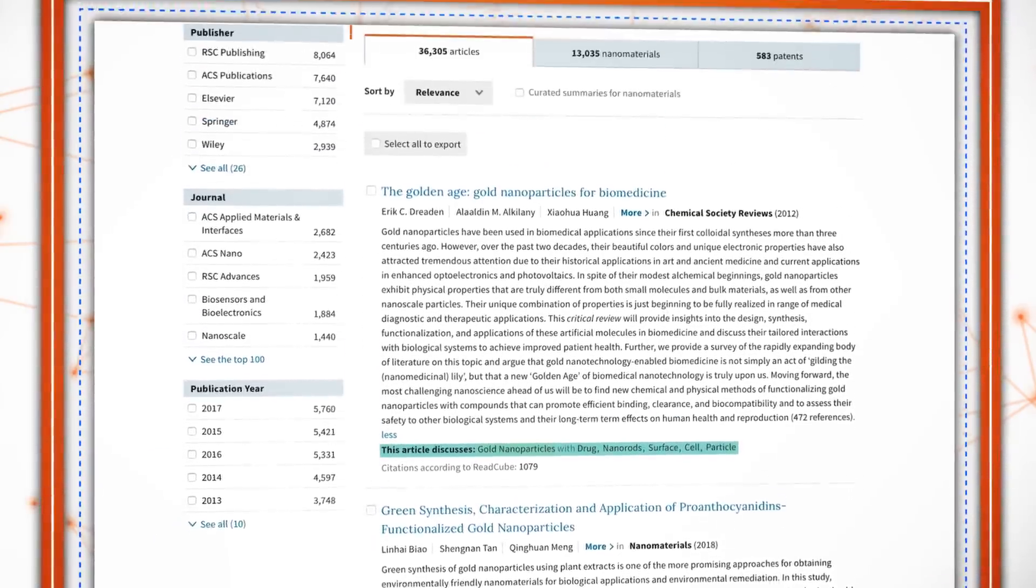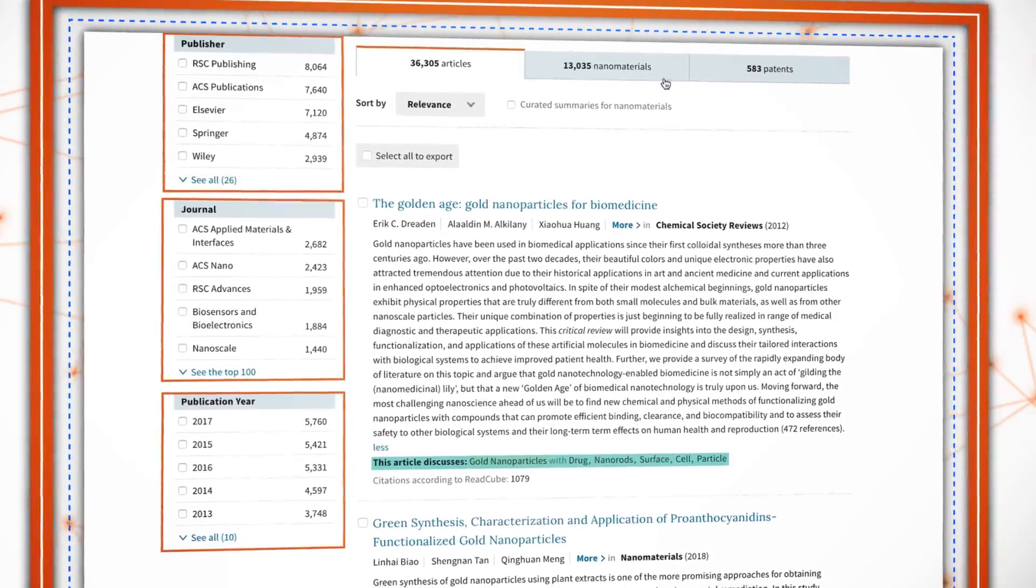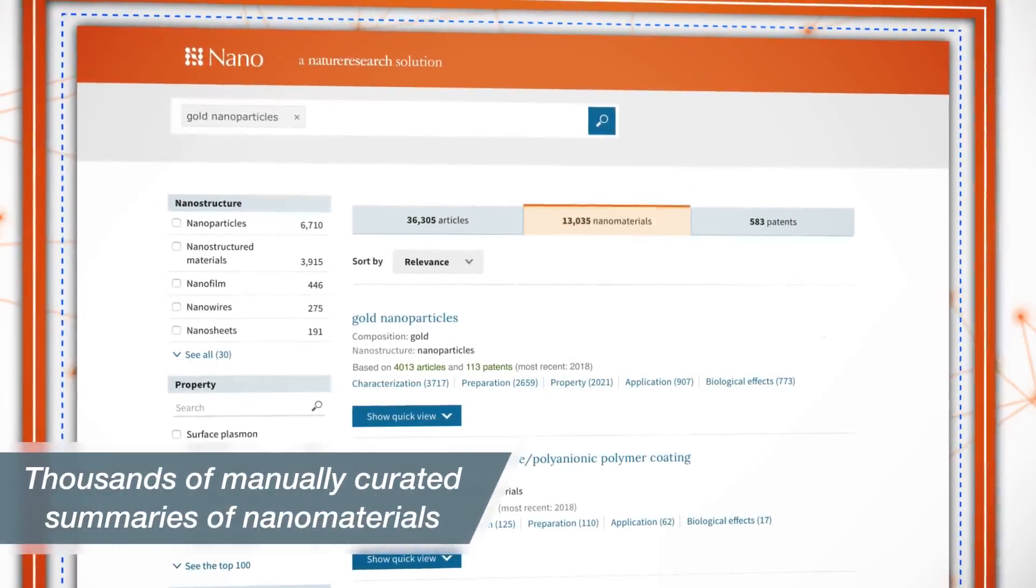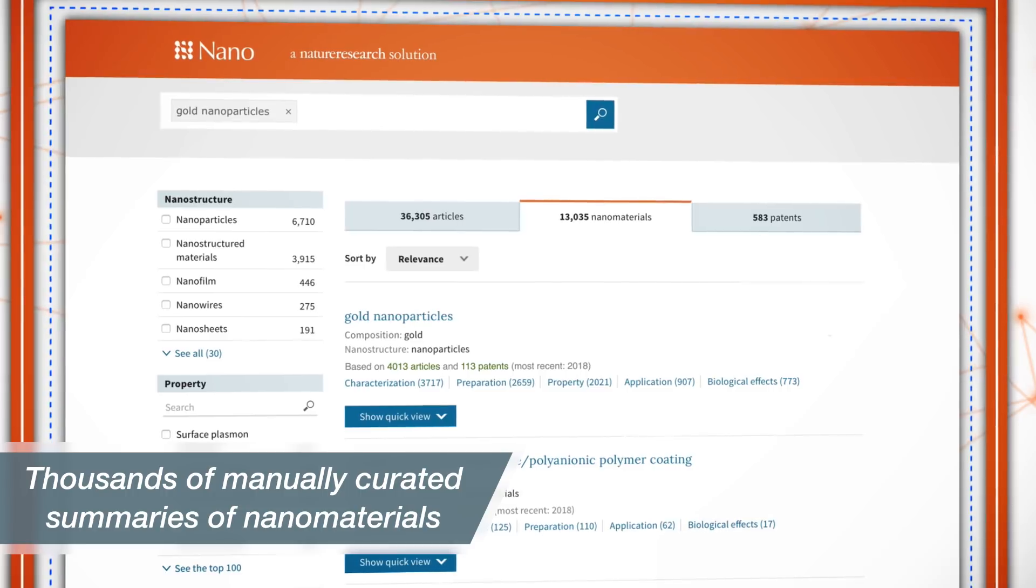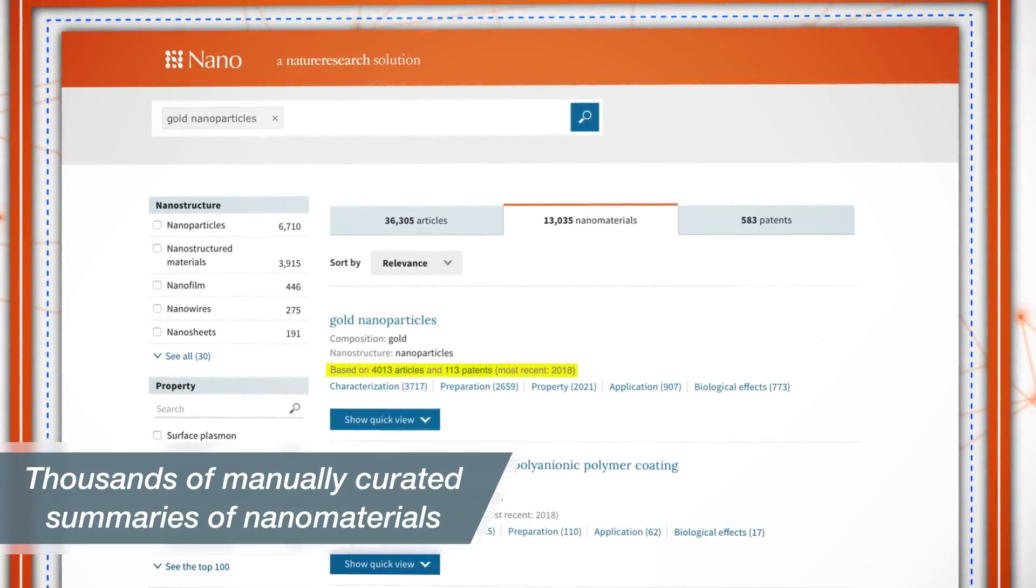Easily filter by publisher, journal and publication year. Access thousands of manually curated summaries of nanomaterials and devices from multiple sources on a single platform.